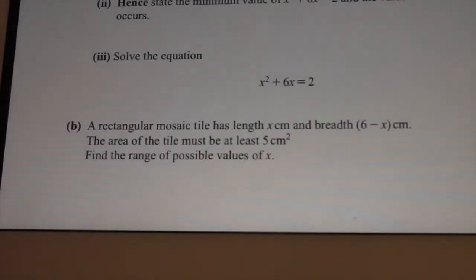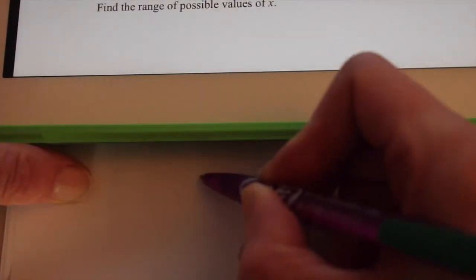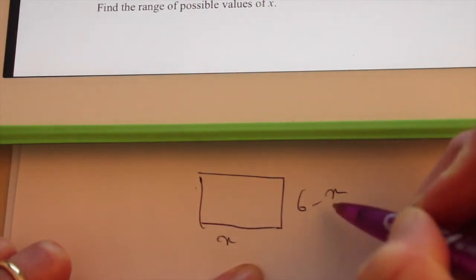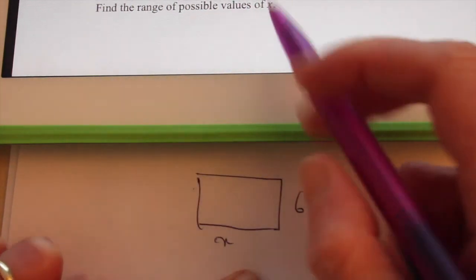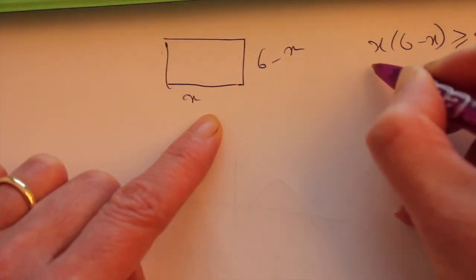The next one I want to look at is from January 2012, question 5B. A rectangular mosaic tile has length x and breadth 6 minus x. So we'll draw that out. Length x and breadth 6 minus x. And you're told the area must be at least 5. So x times 6 minus x must be greater than equal to 5.